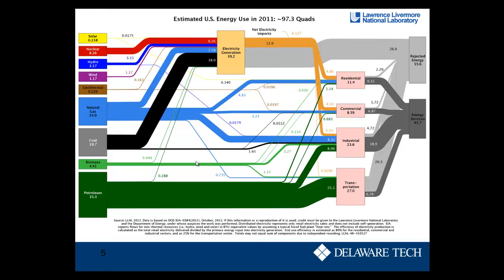This is one of my favorite charts: U.S. energy use in 2011. You can see that we used 97.3 quads. On the left side are all the energy sources — solar, nuclear, hydro, wind, geothermal, natural gas, coal, biomass, and petroleum. On the right side are all the uses — transportation, industrial, commercial, and residential. In the middle are electrical power plants, which convert fuel from the left into forms used in our residences, commercial, industrial, and some transportation applications. This chart gives you the general idea of where all the energy in our system is going.